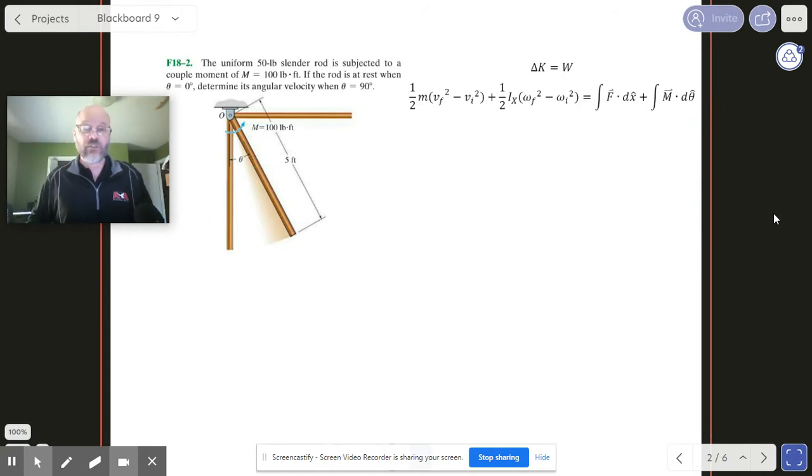Okay, in number two here we've got a rod that's originally hanging down and it's going to twist up to 90 degrees. The thing that's causing it to twist is this moment right here. So it's important early on to think about where we want to put our pivot point, our point of rotation. In this one, like the last one, it just makes a lot of sense to put it right here.